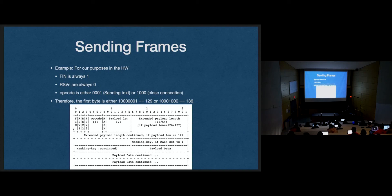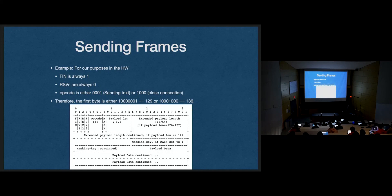To get you started on the homework: the first byte - the FIN bit is always 1, reserve bits are always 0, and the opcode is either 1 or 8. So your first byte is always going to be either 129 or 136. You can read that first byte and check - if it's 136, it's a request to close the connection; if it's 129, you have some parsing to do and need to extract the message. When you get to the payload length, you have to do some masking - things get trickier there, so getting practice with the first byte bitwise parsing will help.